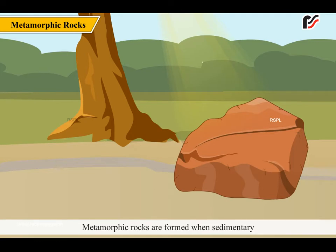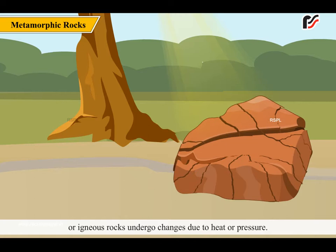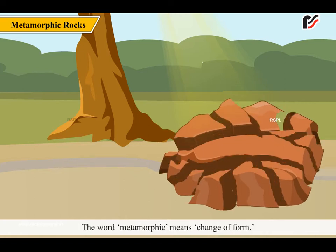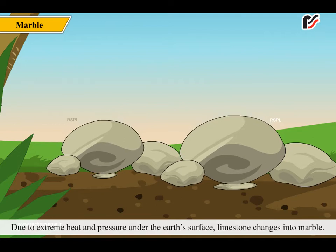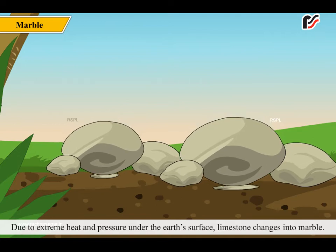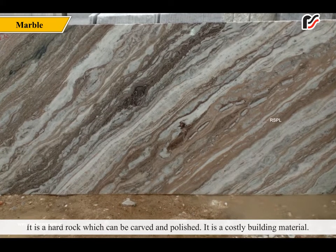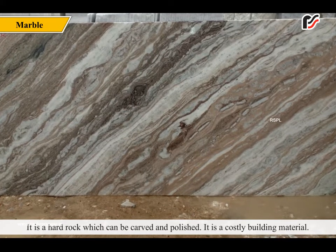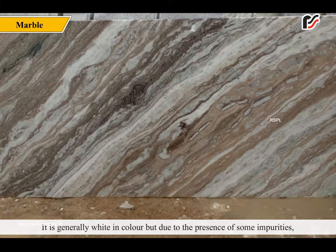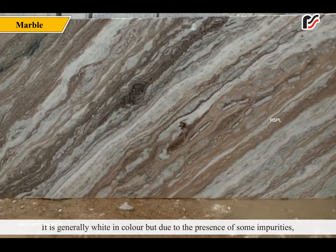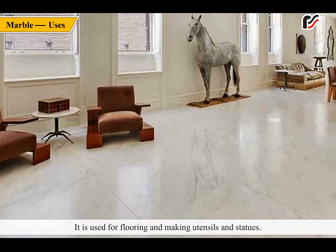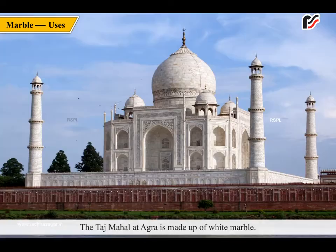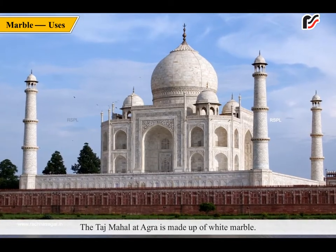Metamorphic rocks are formed when sedimentary or igneous rocks undergo changes due to heat or pressure. The word metamorphic means change of form. Due to extreme heat and pressure under the earth's surface, limestone changes into marble. It is a hard rock which can be carved and polished. It is a costly building material, generally white in color, but due to the presence of some impurities, it is also found in other colors. It is used for flooring and making utensils and statues. The Taj Mahal at Agra is made up of white marble.